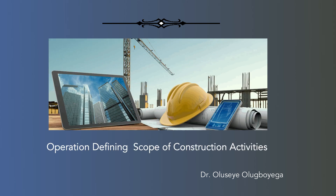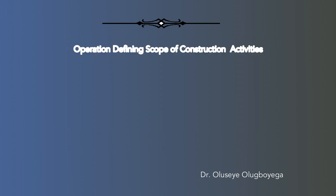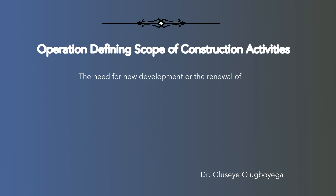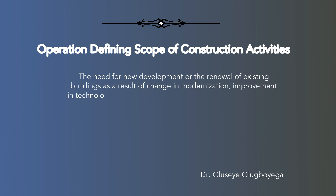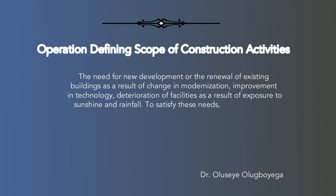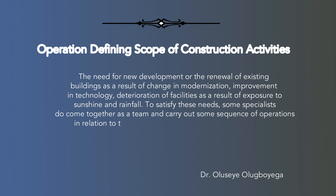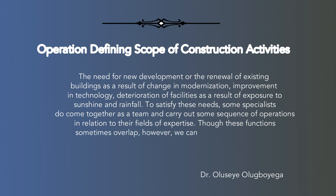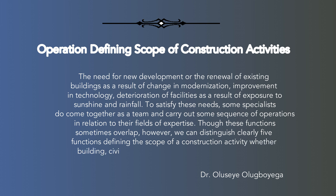Operations defining the scope of construction activities. The need for new development or the renewal of existing buildings arises as a result of change in modernization, improvement in technology, and deterioration of facilities due to exposure to sunshine and rainfall. To satisfy these needs, specialists come together as a team and carry out a sequence of operations in relation to their fields of expertise. Though these functions sometimes overlap, we can distinguish clearly five functions defining the scope of a construction activity, whether building, civil engineering or industrial in nature.